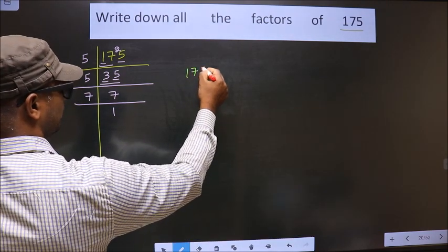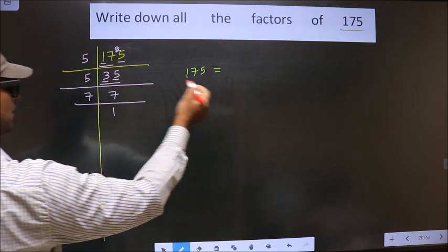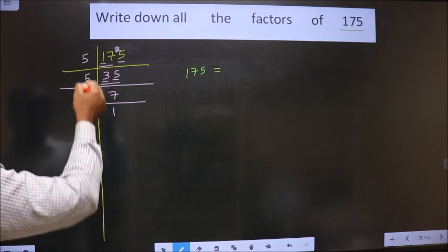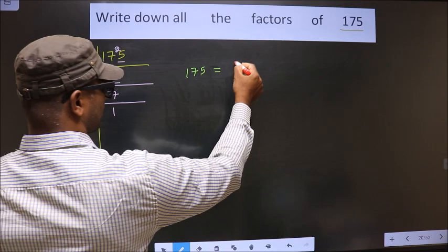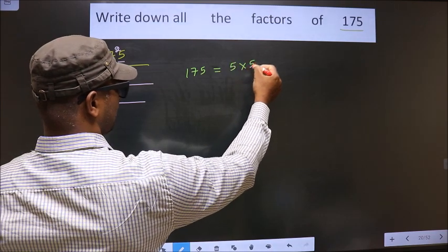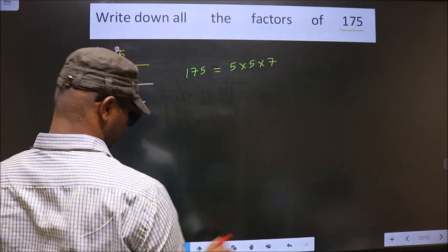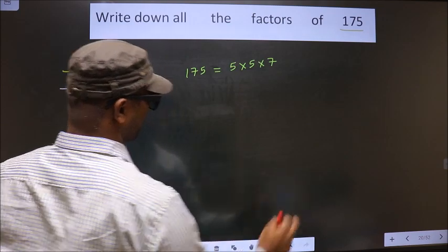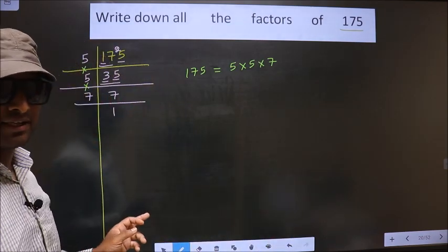Now 175 is equal to the product of these numbers, that is 5 into 5 into 7. Okay, next.